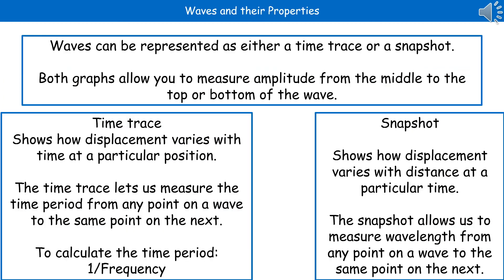Waves can be represented as either a time trace or a snapshot. Both graphs allow us to measure amplitude, but they offer different things. The time trace shows how displacement varies with time at a particular position, and lets us measure the time period from any point on a wave to the same point on the next. We can calculate the time period by doing one divided by frequency. The snapshot shows how displacement varies with distance at a particular time, and allows us to measure the wavelength.